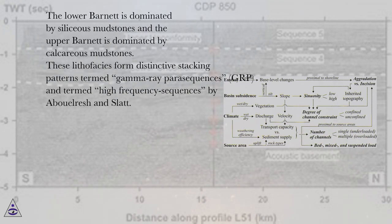The lower Barnett is dominated by siliceous mudstones and the upper Barnett is dominated by calcareous mudstones. These lithovices form distinctive stacking patterns termed gamma-ray pair sequences (GRP) and termed high-frequency sequences.